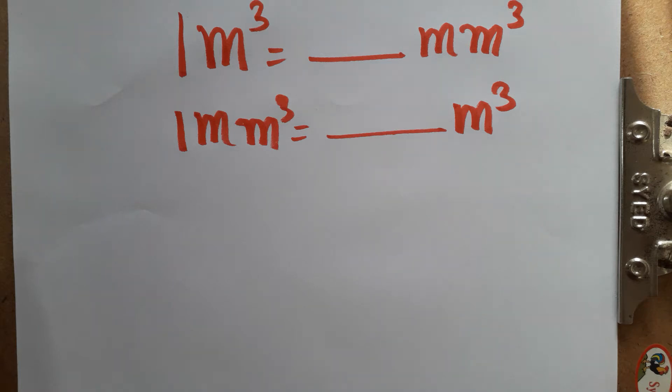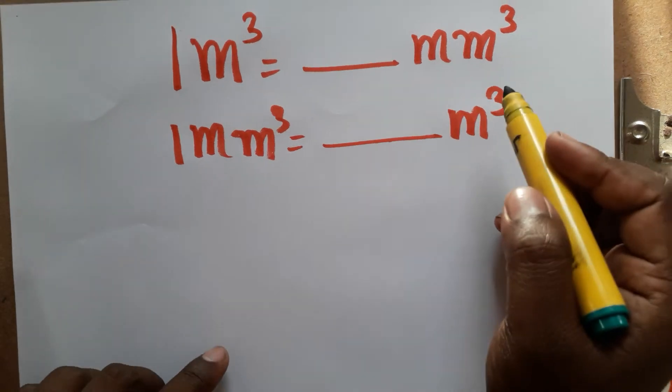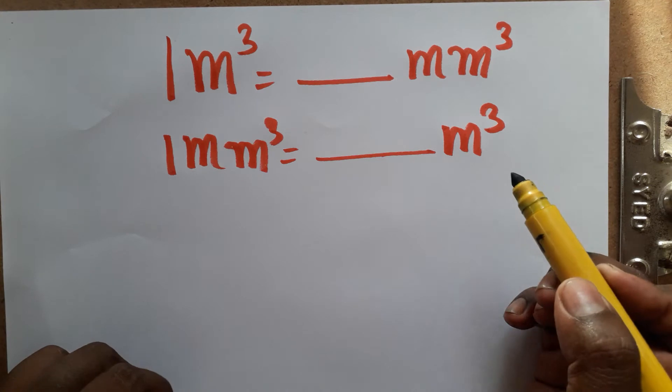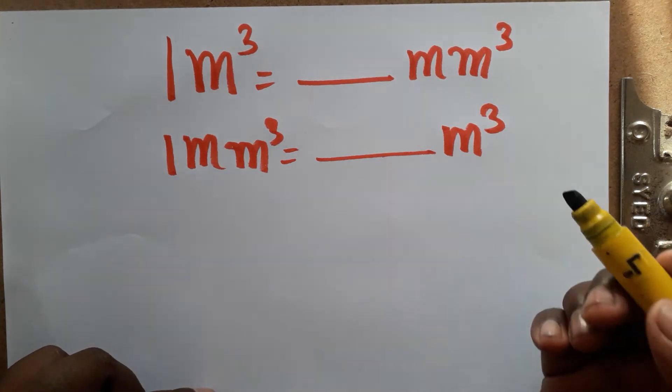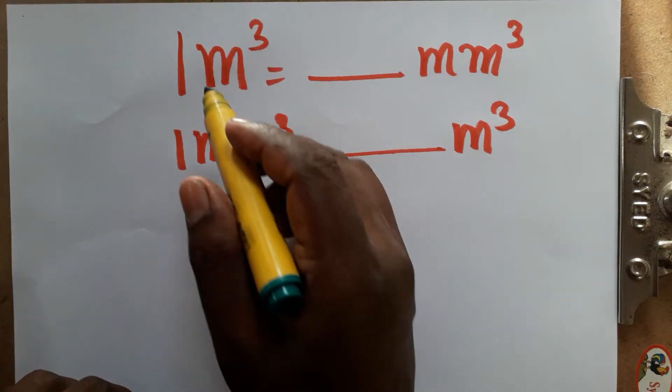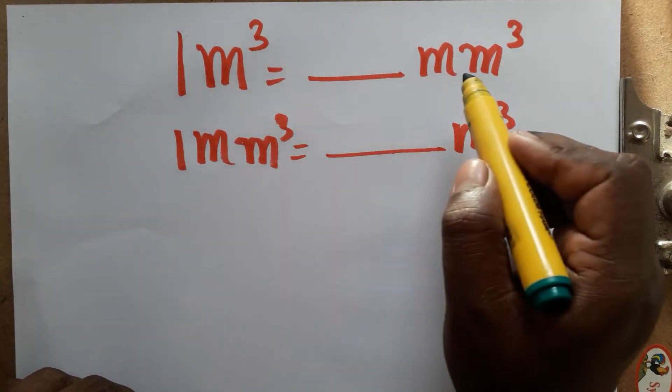Hello students, today we are going to learn: 1 meter cube is equal to how many millimeter cubes, and 1 millimeter cube is equal to how many meter cubes. We are going to learn both conversions. First, we will learn 1 meter cube is equal to how many millimeter cubes.